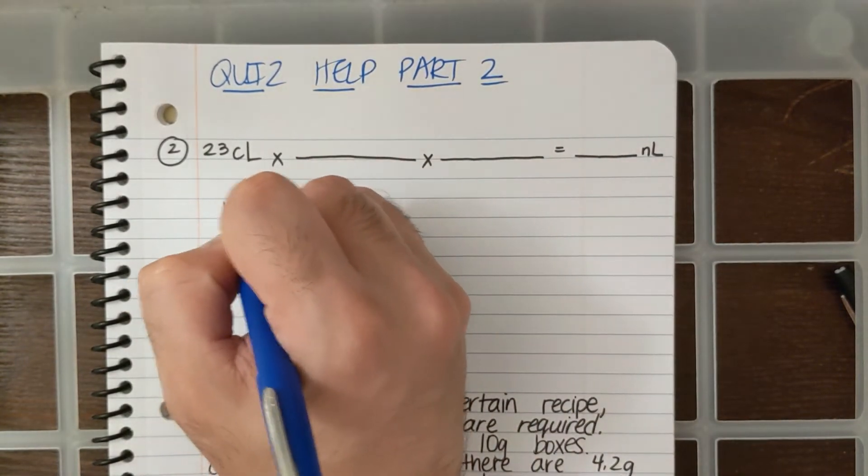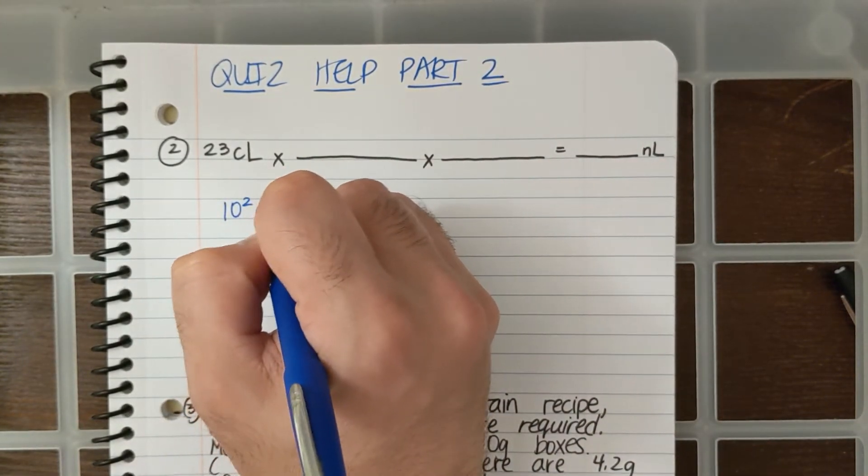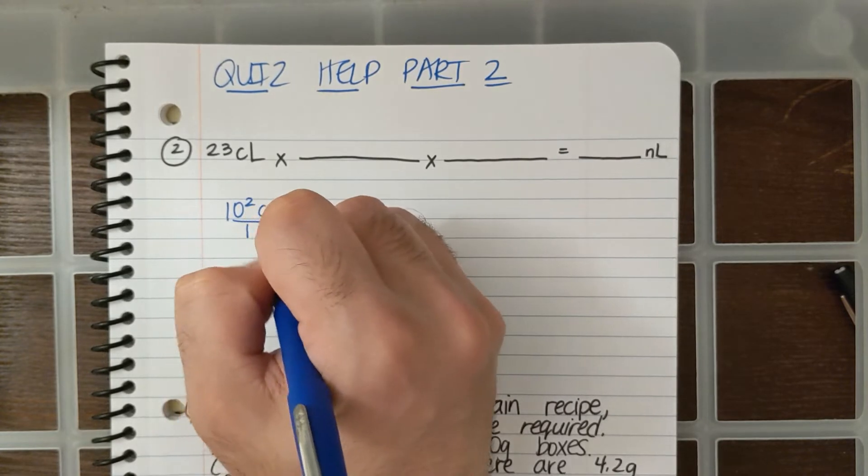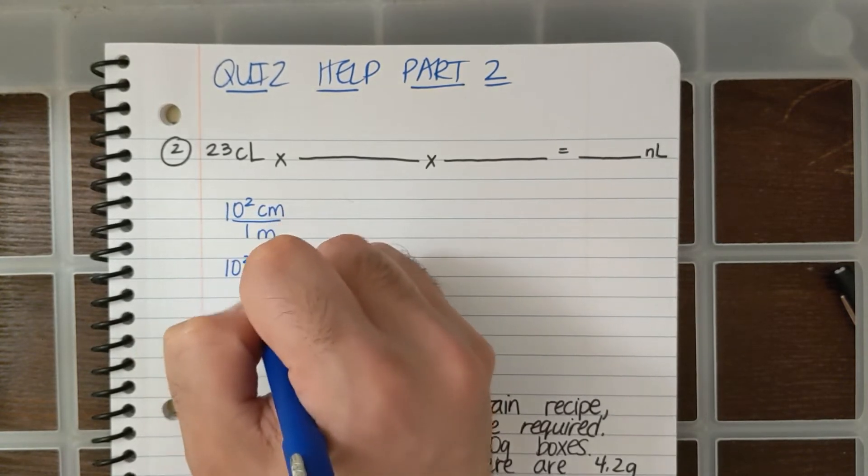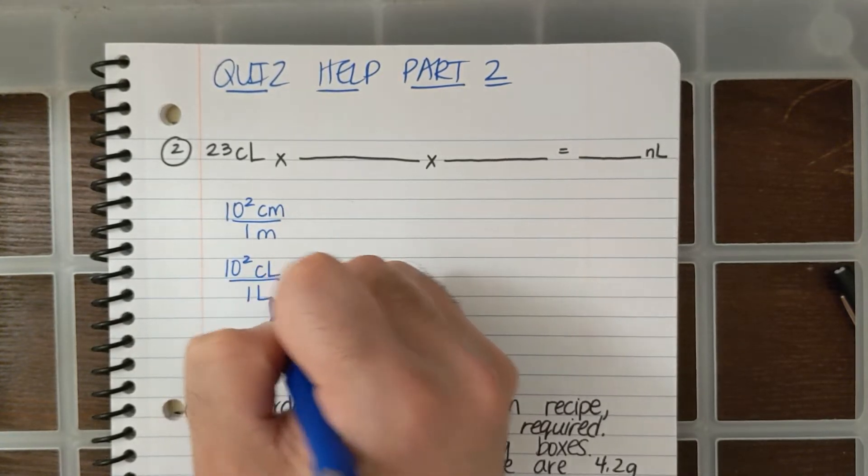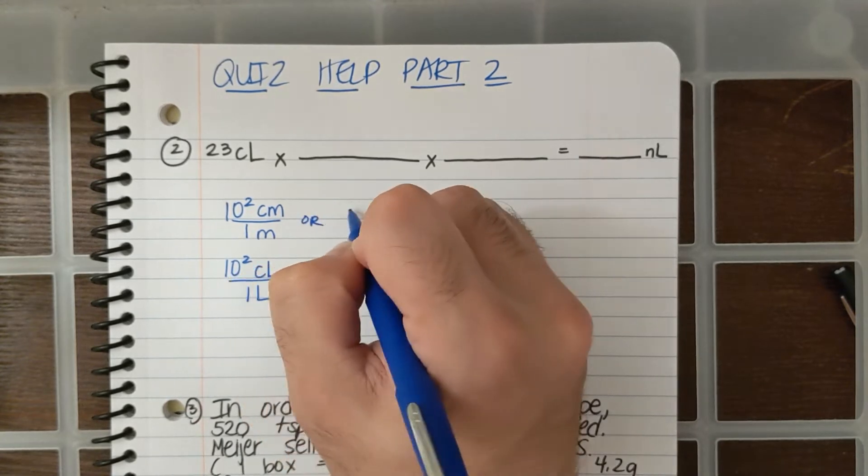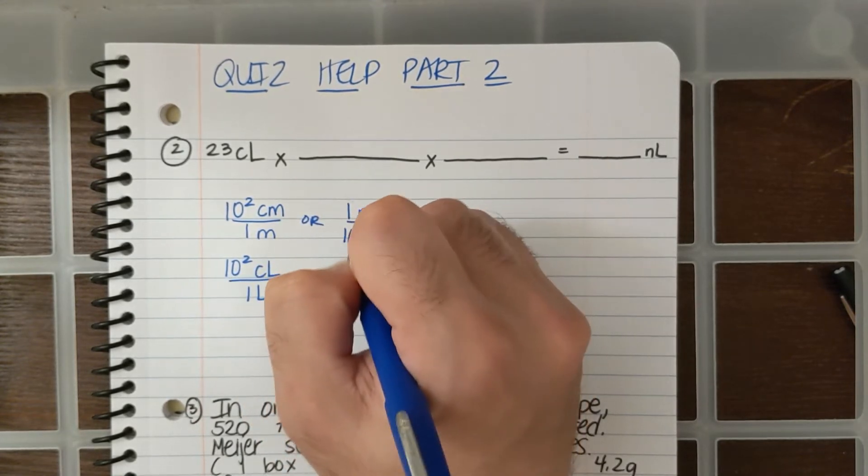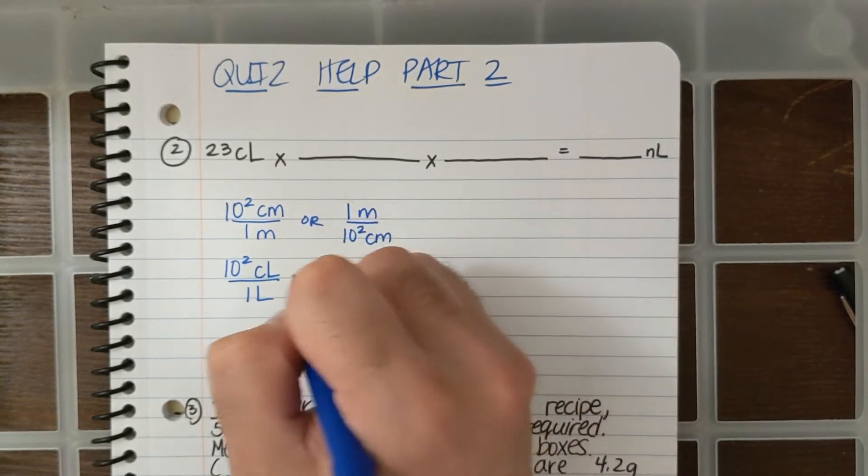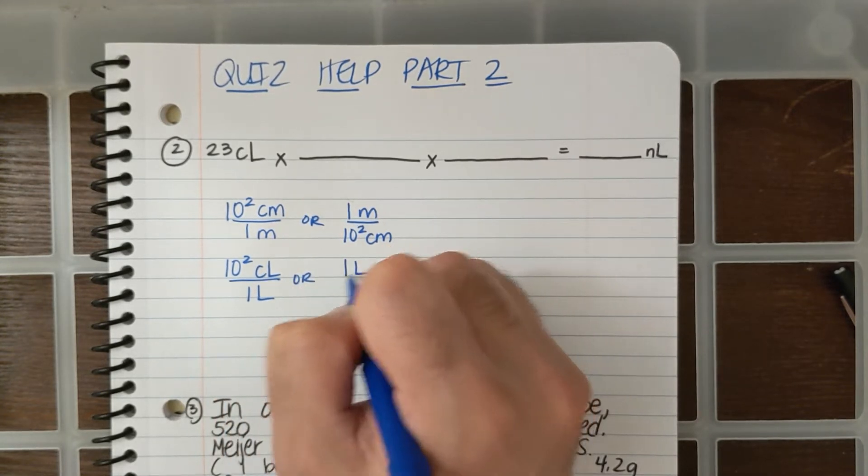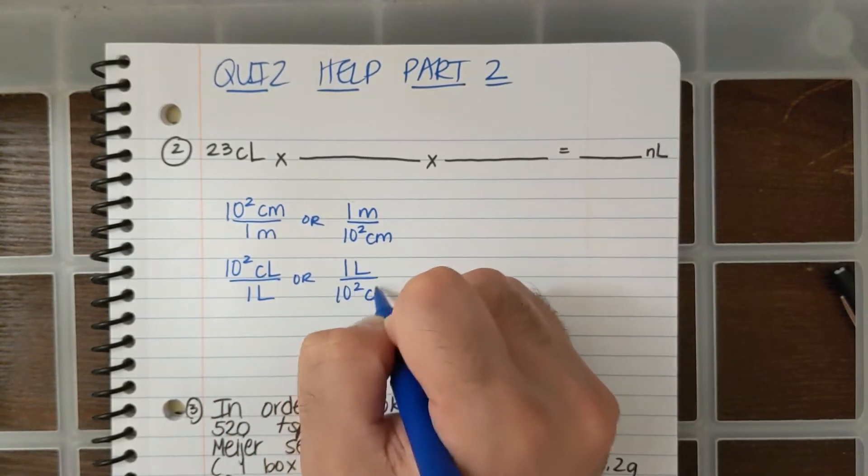What you do know is that there are 10 to the squared centimeters over 1 meter, which I can write as 10 to the squared centiliters over 1 liter. Or 1 meter over 10 to the second centimeter, which can be written as 1 liter over 10 to the second centiliters.